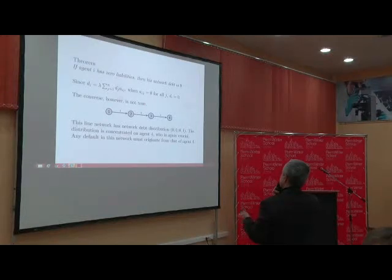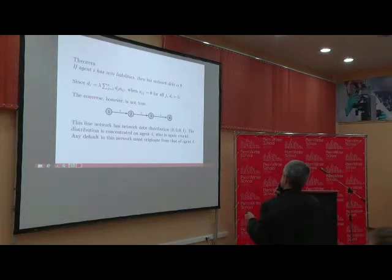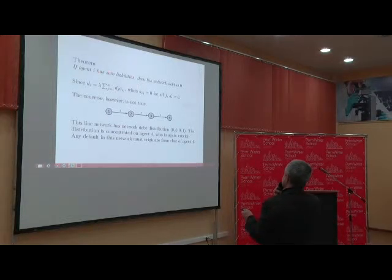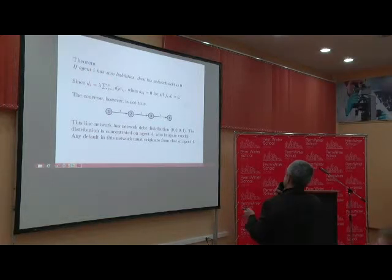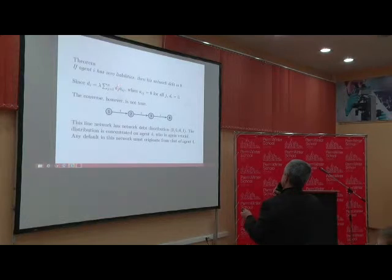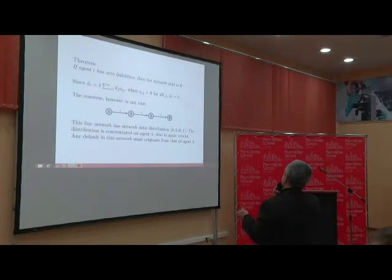This measure has to be a consistent measure. The theorems in the paper set out these consistency properties. If a particular bank has zero liabilities — so A_i to A is zero — then its network debt D must be zero. If you have zero liabilities, your network debt is zero. But the converse is not necessarily true: you may be borrowing from a bank that owes nobody, so that bank's network debt is also zero even though you are borrowing from it.